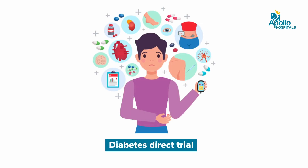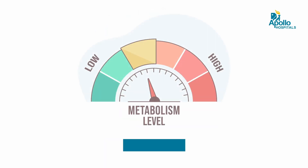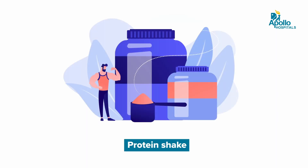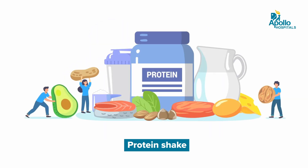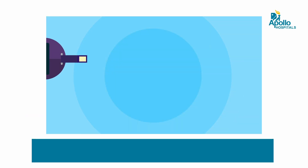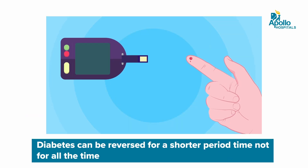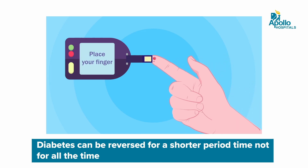There have been studies in the UK — what we call the DiRECT trial — where patients were given very low calories, around 686 calories per day in the form of a protein shake, and were followed over two years. They found that diabetes can go into remission. But every patient cannot maintain a very strict low-calorie diet throughout their life. So the fact remains that diabetes can be reversed for a shorter period of time, not permanently. Diabetes cannot be cured; it can only be controlled.